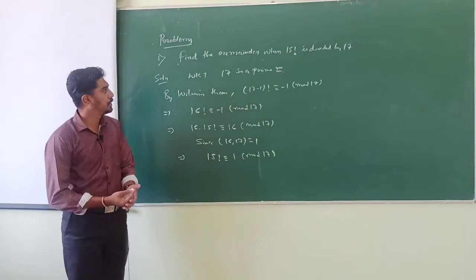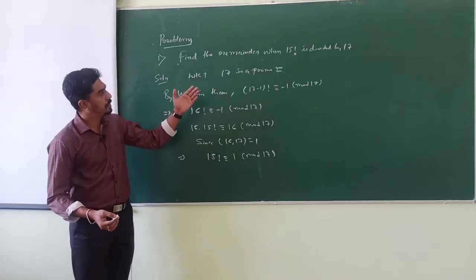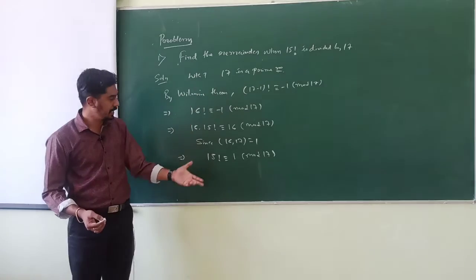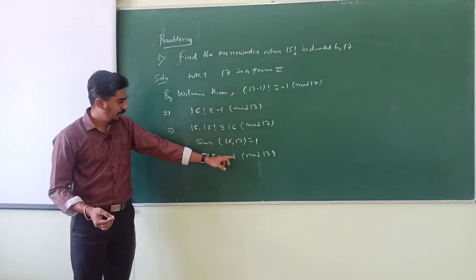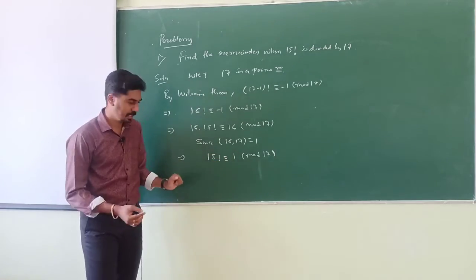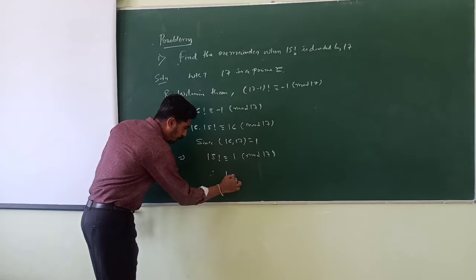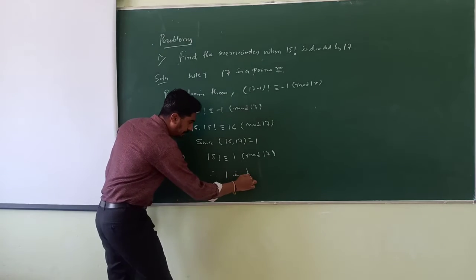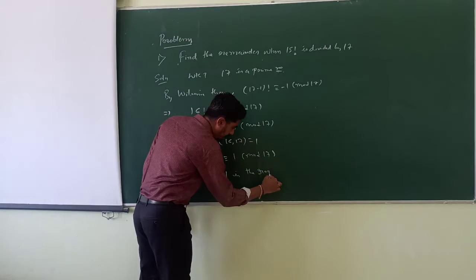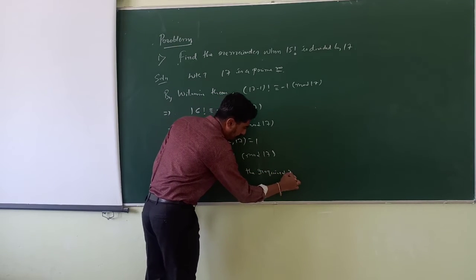So we have shown that when 15! is divided by 17, the remainder is 1. Therefore, 1 is the required remainder.